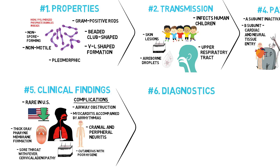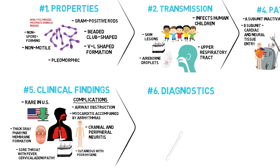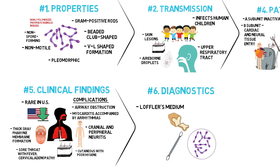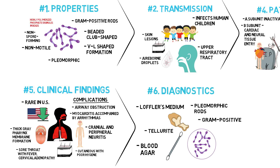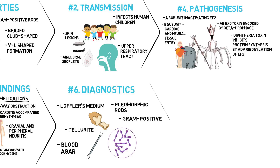Laboratory diagnosis involves both isolating the organism and demonstrating toxin production. A throat swab should be cultured on Löffler's medium, a tellurite plate, and blood agar plate. Smears of the throat swab can be stained with both gram stain and methylene blue. Pleomorphic gram-positive rods can be suggestive, and the methylene blue stain is excellent for revealing the typical metachromatic granules.